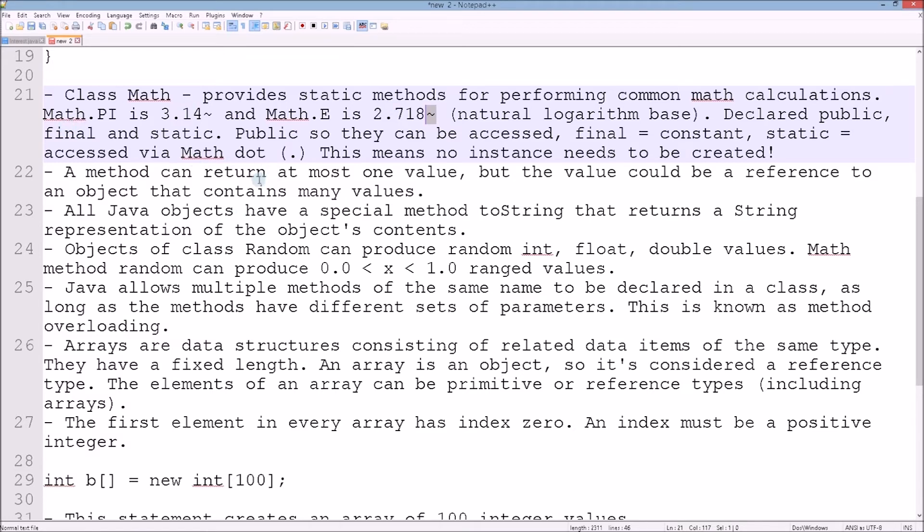A method can return at most one value, but the value could be a reference to an object that contains many values. We saw arrays are a way to do this - to store a variety of values within one variable that we've declared as an array.